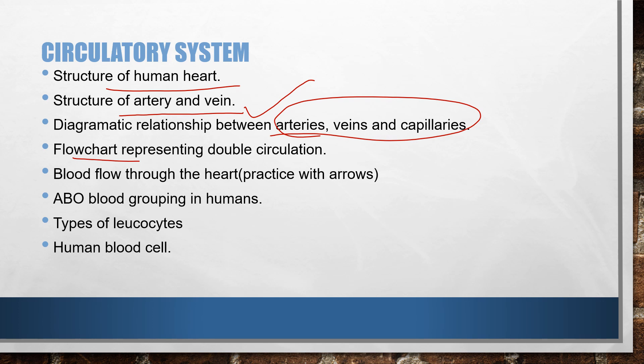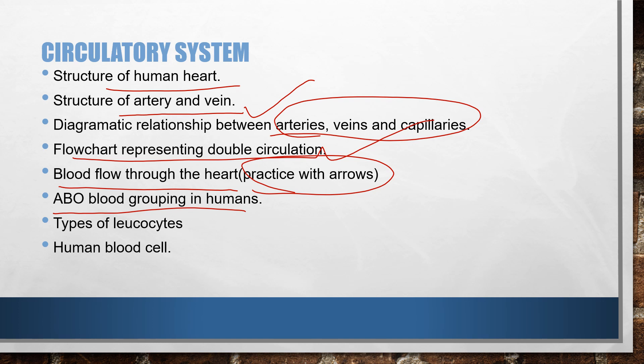Next comes the flow chart representing double circulation, then the blood flow through the heart — this should be done with arrows. If you are not putting arrows, you won't know which direction the blood is flowing — oxygenated as well as deoxygenated. Next comes the ABO blood grouping system chart, which should be practiced with antigens and antibodies. Then the types of leukocytes — practice all their diagrams with labeling, including bilobed and trilobed types, and the human blood cell. That covers the circulatory system diagrams.